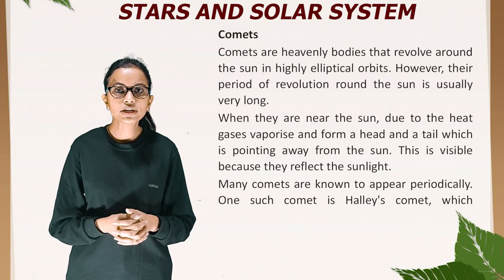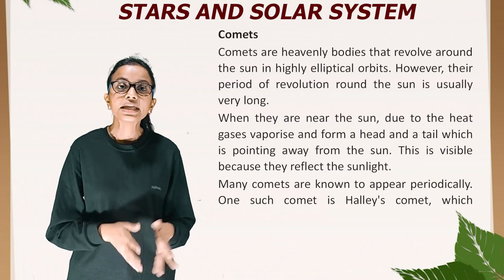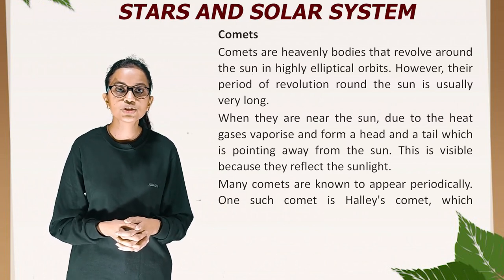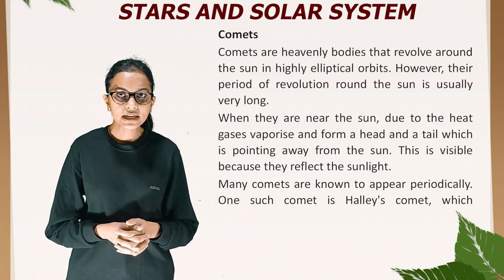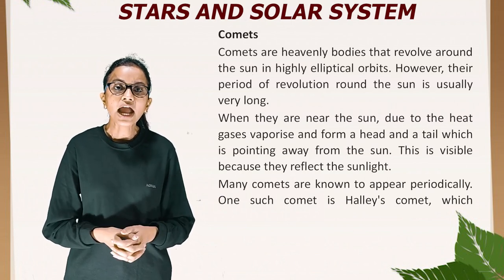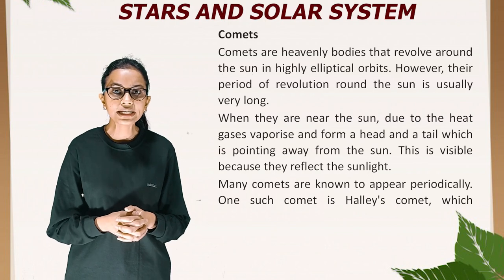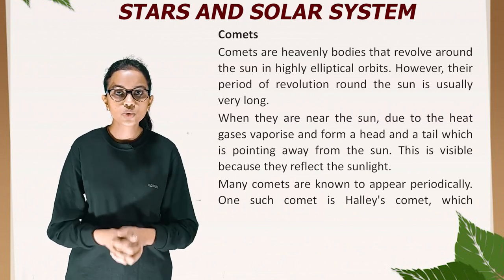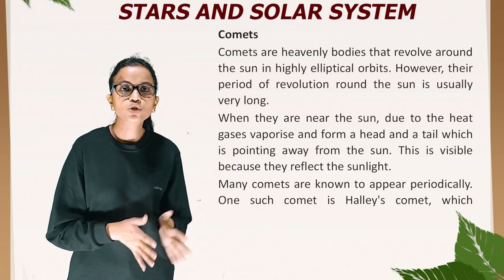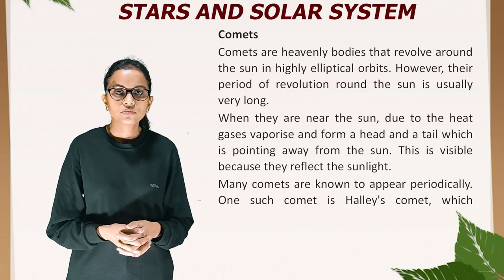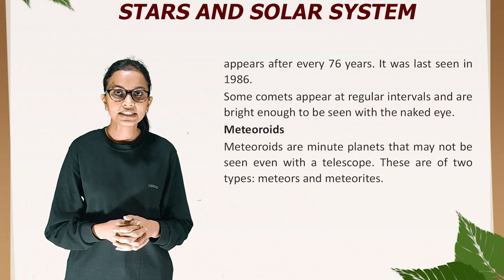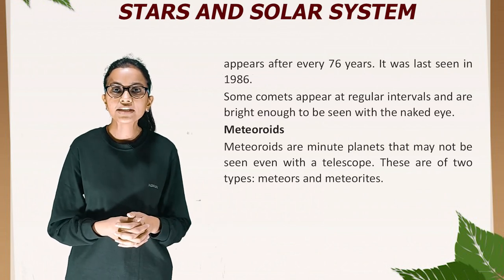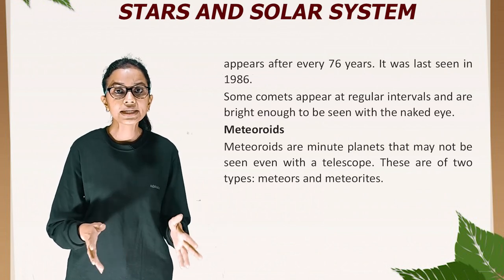Comets are heavenly bodies that revolve around the Sun in highly elliptical orbits, and their period of revolution is usually very long. When they are near the Sun, the heat causes gases to vaporize and form a head and a tail pointing away from the Sun, visible because they reflect sunlight. Many comets appear periodically; one such comet is Halley's Comet, which appears after every 76 years and was last seen in 1986. Some comets appear at regular intervals and are bright enough to be seen with the naked eye.